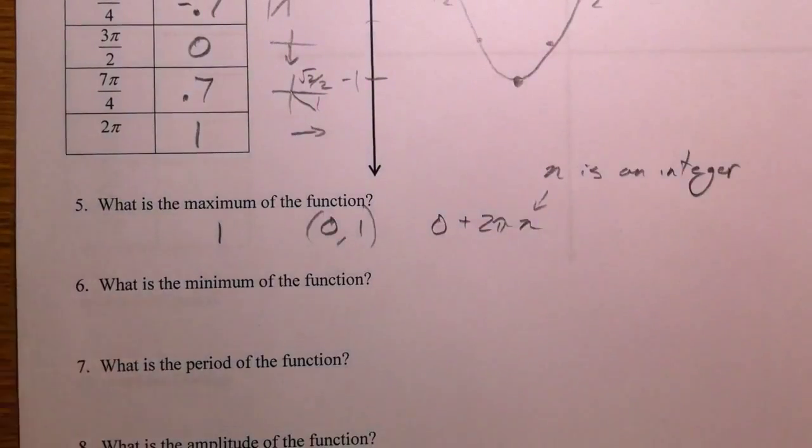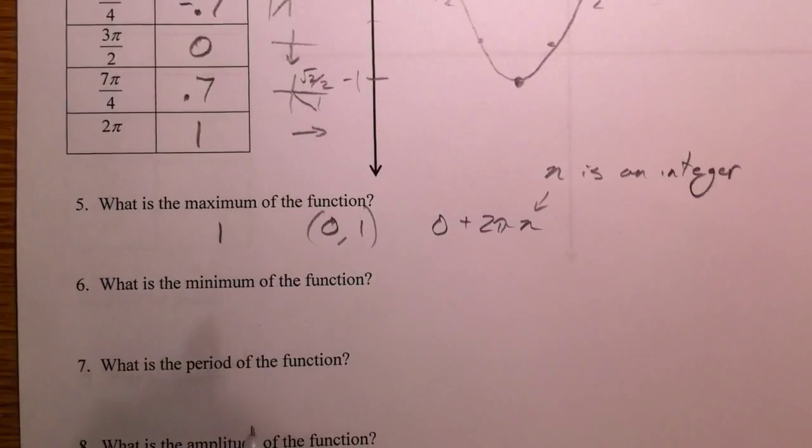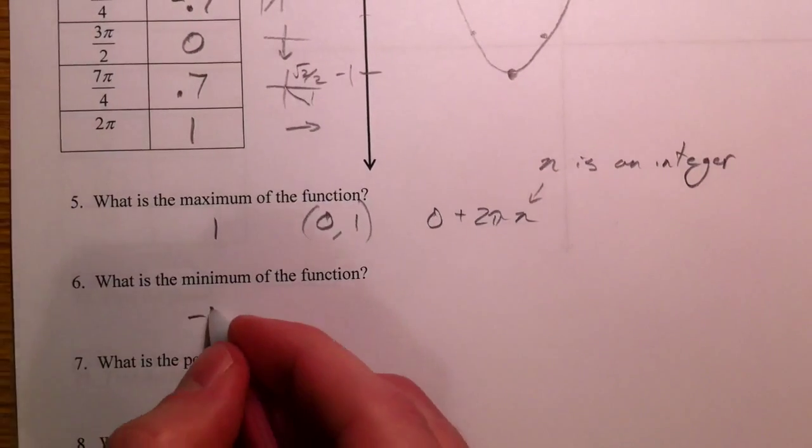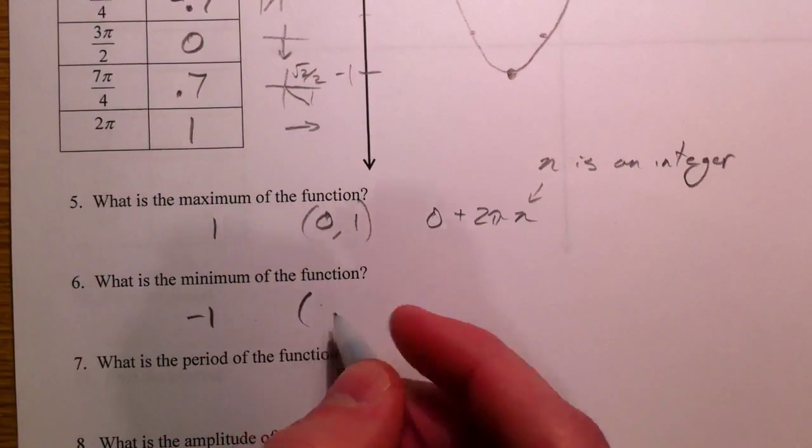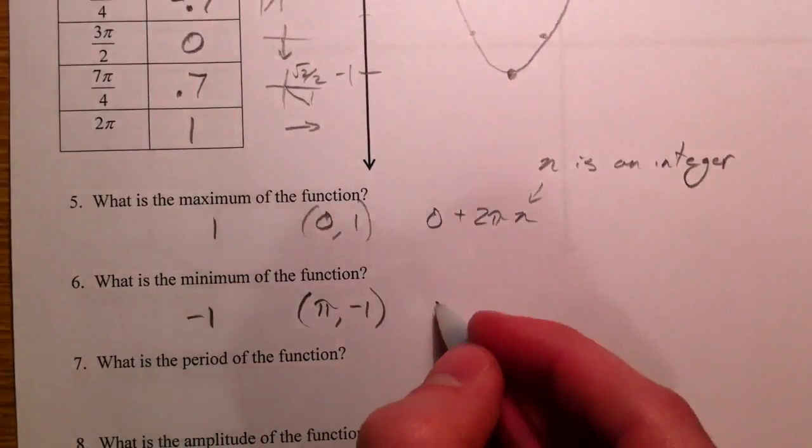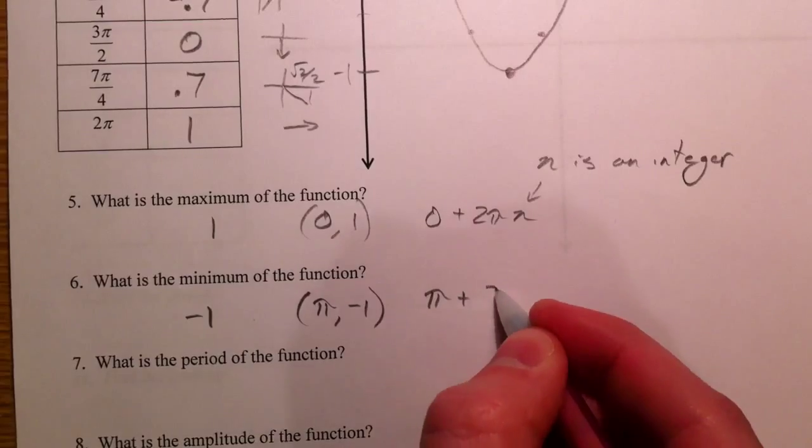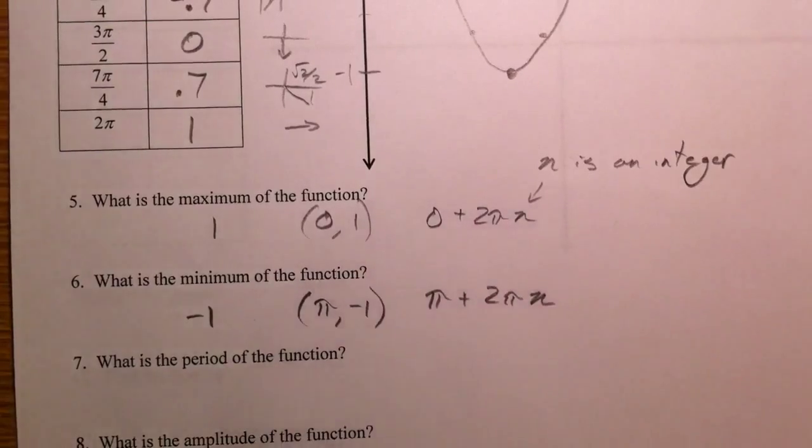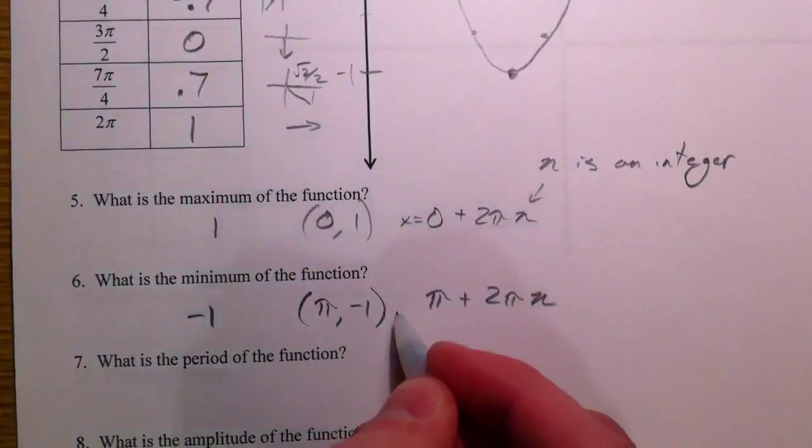Meaning the numbers 1, 2, 3, or positive, or negative 1, 2, 3. Minimum, still a negative 1. So at pi, negative 1, or at pi plus 2 pi n is where all of them happened.